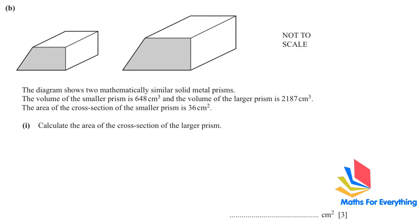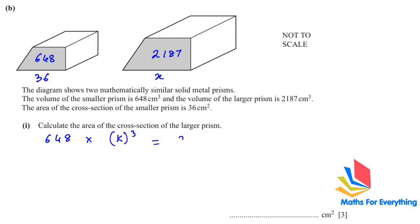Part B is a similar shapes question. Two mathematically similar solid metal prisms are given. The volume of the smaller prism is 648 cm³ and the volume of the larger is 2187 cm³. The cross-sectional area of the smaller prism is 36. Find the scale factor first: k³ = 2187 / 648, so k = cube root of (2187/648) = 1.5.